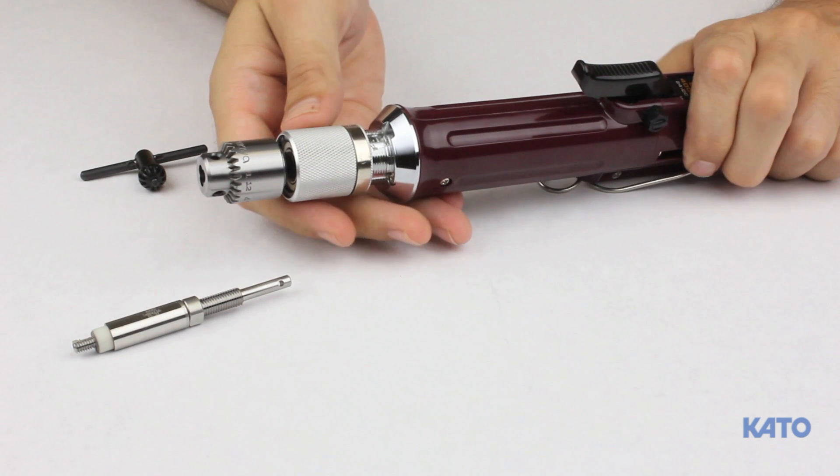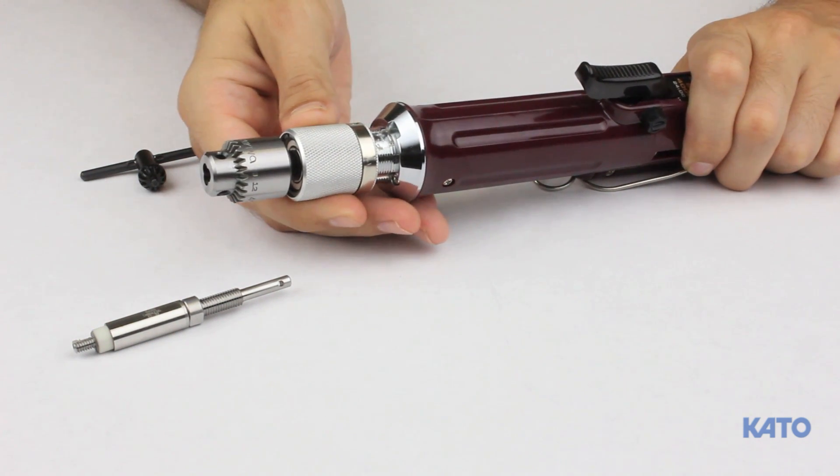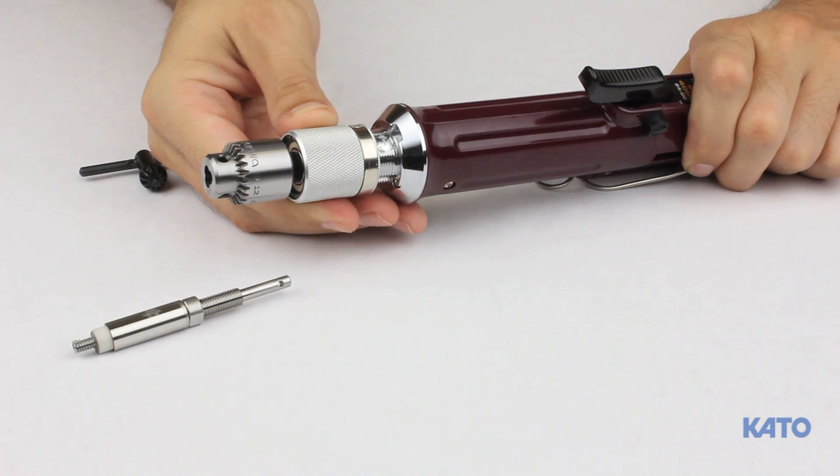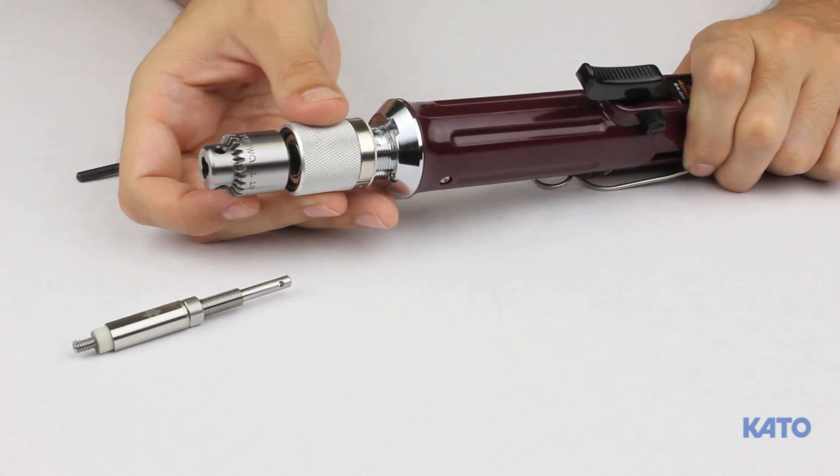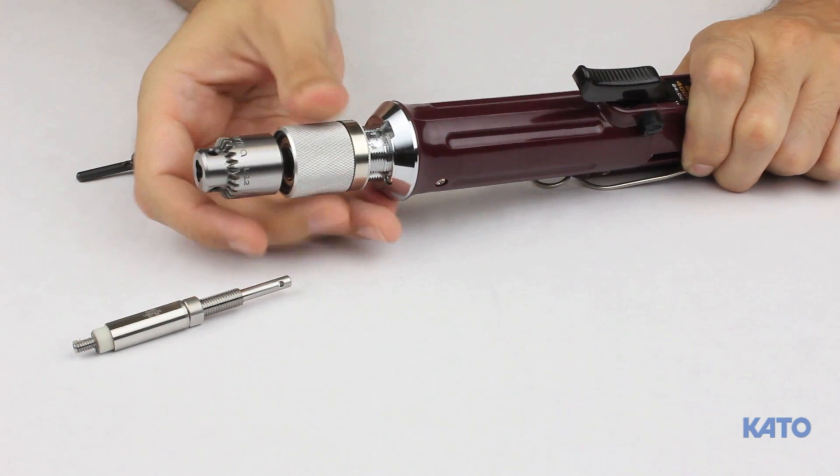Towards the front, you'll find the torque adjusting nut. It controls how much torque is applied before the driver automatically reverses. Turn it clockwise to tighten or increase the torque and counterclockwise to loosen or decrease the torque.